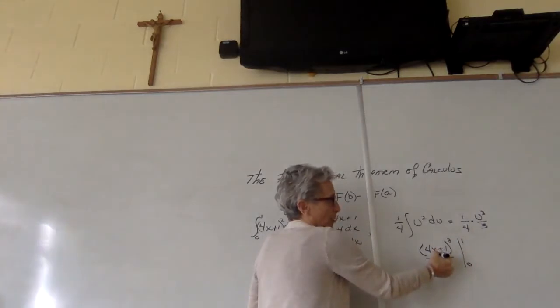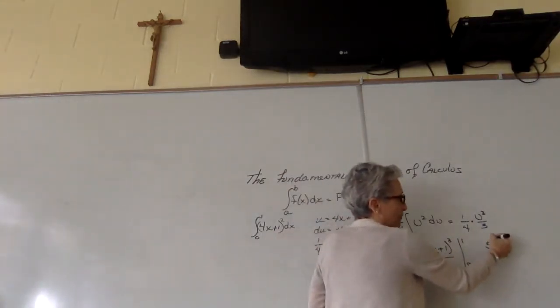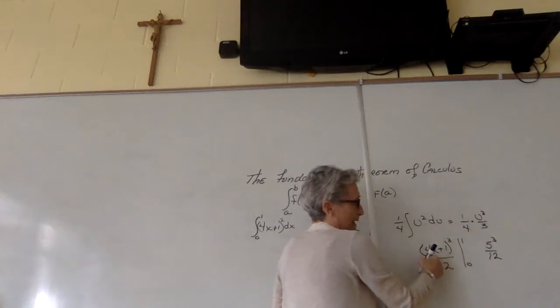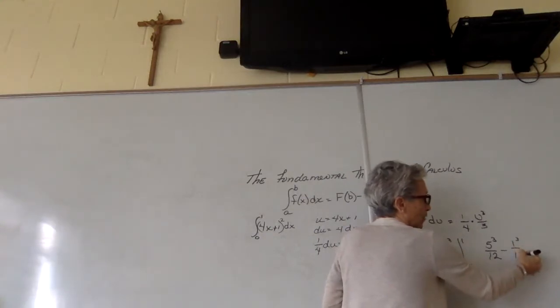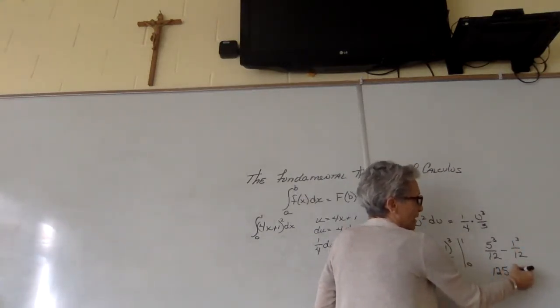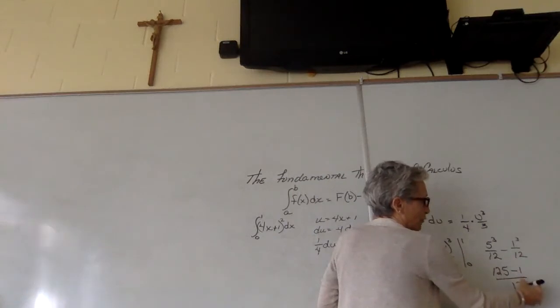Plug in 1, and you have 5 cubed over 12. Plug in 0, and you have 1 cubed over 12. So you have 125 minus 1 all over 12,